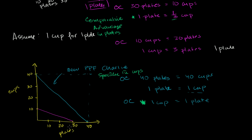And Patty should still specialize in plates. To show that they can still get an outcome beyond even Charlie's production possibilities frontier, let's think about how they could trade. Charlie is going to specialize in cups, sitting right there producing 40 cups a day. And Patty is going to specialize in plates, sitting right over there producing 30 plates a day.